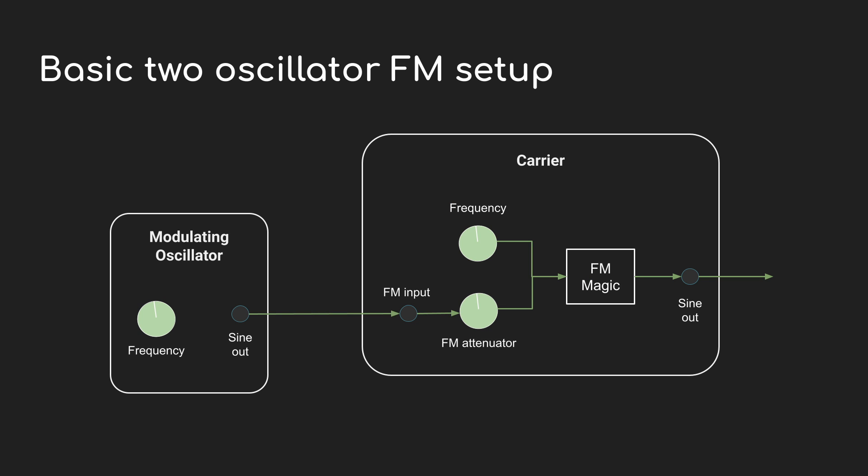Okay, this is the basic patch diagram for frequency modulation. There are two oscillators. If you're coming from a keyboard background you might see these called operators — they're just oscillators though. And we give the two of them specific names: carrier and modulator. The modulator is the one that's going to do the modulating, and the carrier is the one that's going to be modulated.